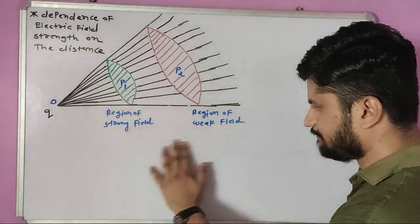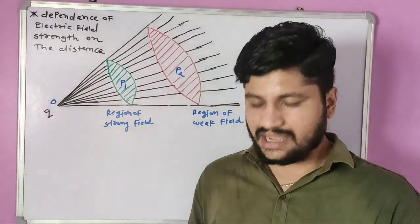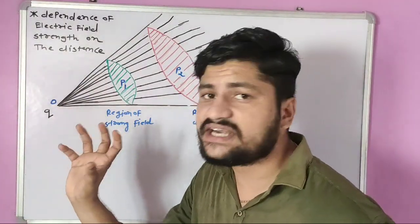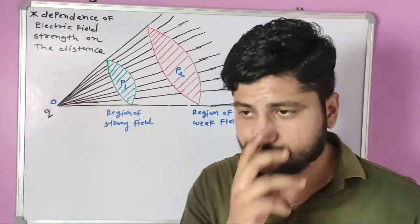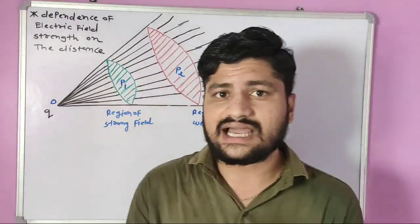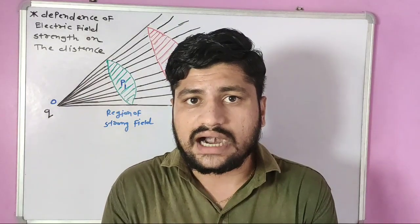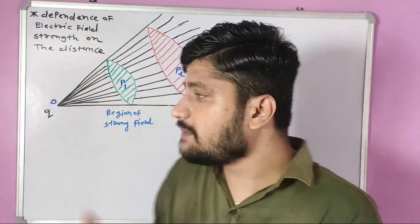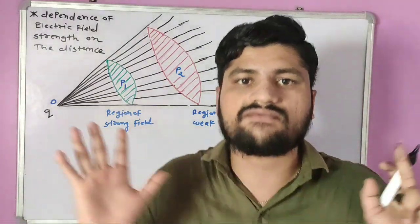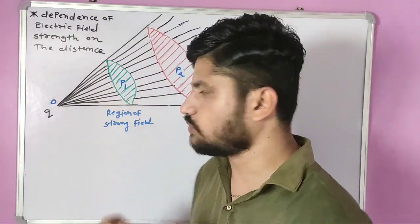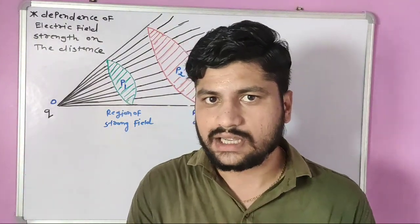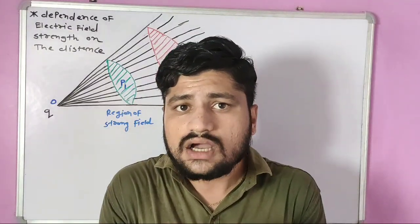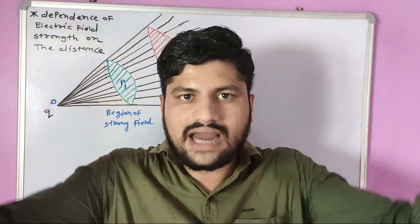Let's start. We consider a point charge Q — a positive charge. The electric field is radially outward in three dimensions. You can see a point charge exists in three dimensions, and the electric field direction is radially outward.